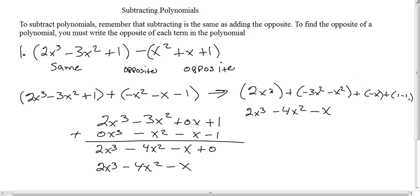And of course, 1 from 1, it's going to give us plus 0. We can write this again as 2x³ - 4x² - x. So again, both ways work.